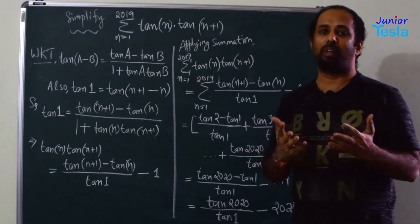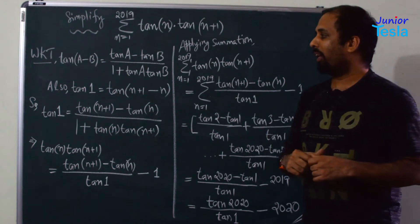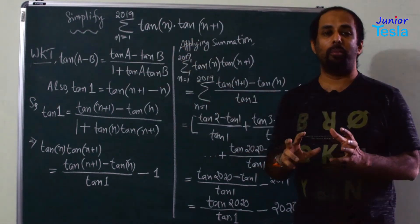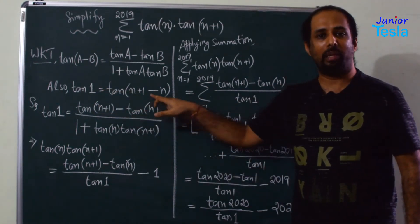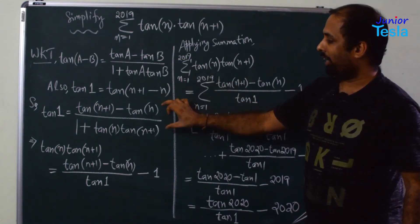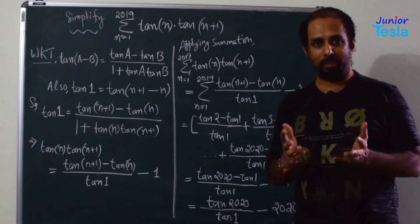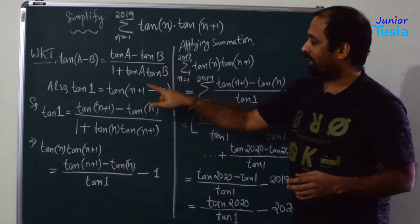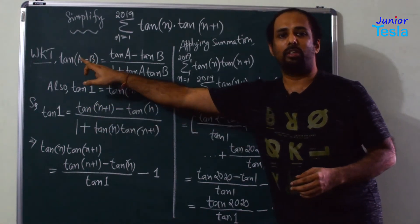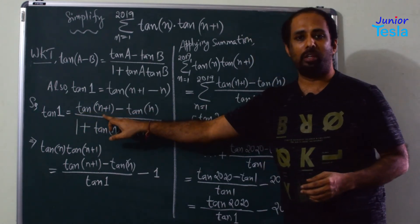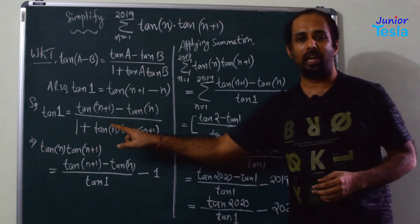Let us think of an identity involving a difference. The identity that comes to mind is tan(a − b), which equals tan(a) − tan(b) divided by 1 + tan(a)·tan(b). Here, in place of a and b, we substitute n+1 and n. Since (n+1) − n = 1, we can write: tan(1) = tan(n+1 − n), which gives tan(1) = [tan(n+1) − tan(n)] / [1 + tan(n+1)·tan(n)].